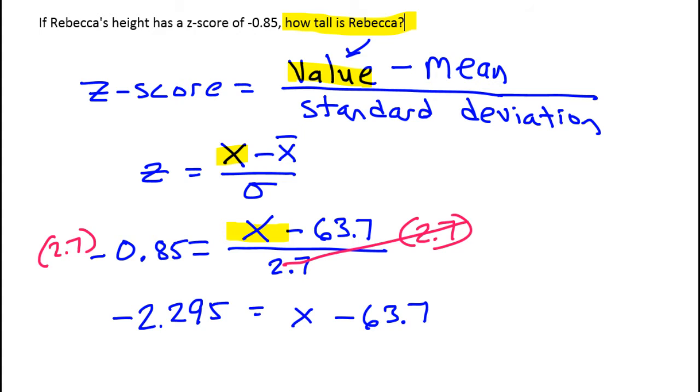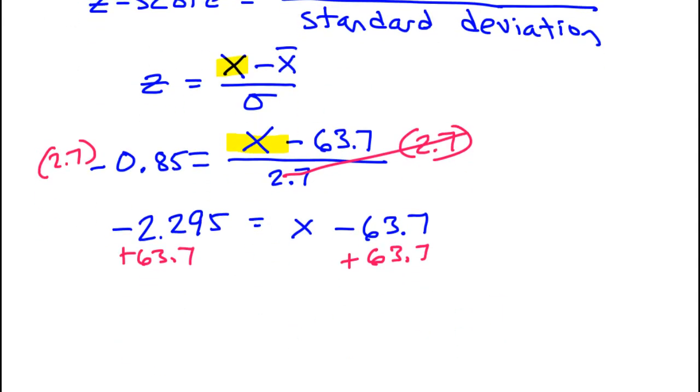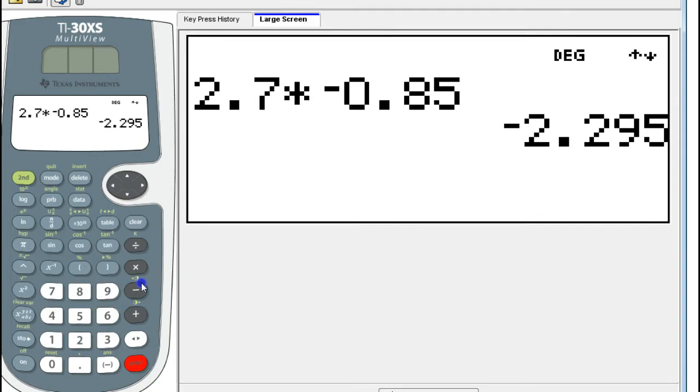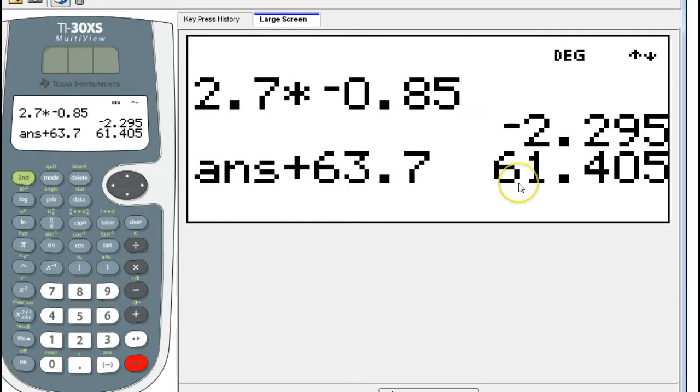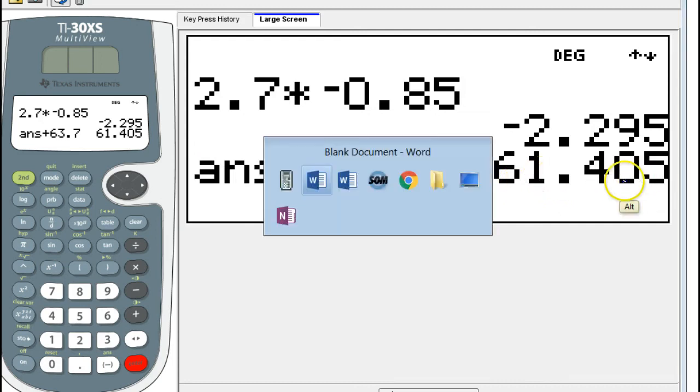All right, so now I'm going to add 63.7 to both sides to get x by itself. So this number is already here, so I want to add 63.7, so I'll just hit plus 63.7. So there you go, 61.405.